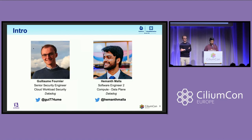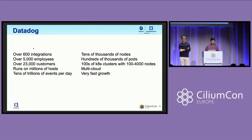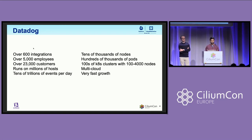And I'm joined by Will, who works as a security engineer on the Cloud Workload Security team. If you haven't heard of Datadog, we are a cloud monitoring and observability company. Here are a few quick facts about us, but the most important one is we run hundreds of Kubernetes clusters with thousands of nodes in them, and all of them run Cilium. We run on all major cloud providers.